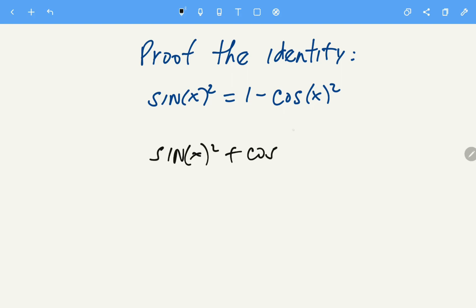If we subtract cosine squared from both sides, let's subtract cosine of x squared from here and also from the right side. So the cosines cancel and we have sine of x squared equals 1 minus cosine of x squared.